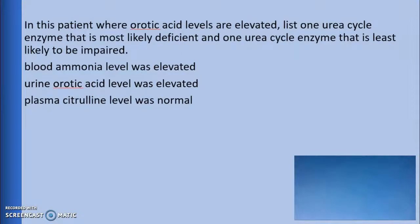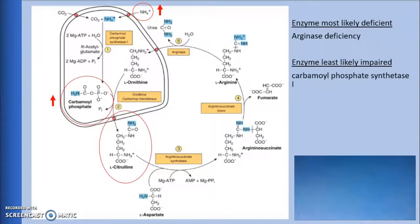The next part of the question asks us to list one urea cycle enzyme that is most likely deficient and one urea cycle enzyme that is least likely to be impaired. We were told that the blood ammonia level was elevated, the urine orotic acid level was elevated, and the plasma citrulline level was normal. We know from lecture that when carbamoyl phosphate synthase 1 is deficient, we would not have elevated orotic acid levels, so we know that carbamoyl phosphate synthase 1 is working. Identifying the most likely deficient enzyme is a little tricky. We see that we have high orotic acid levels and normal citrulline levels. This eliminates ornithine transcarbamylase (OTC), because we know from lecture that when OTC is deficient, citrulline is low.